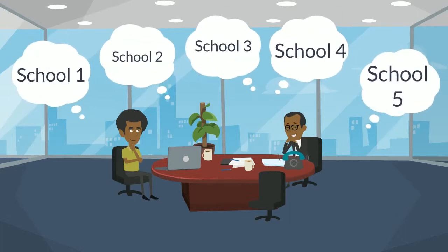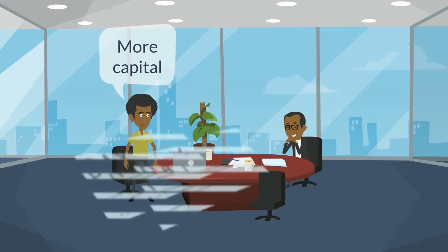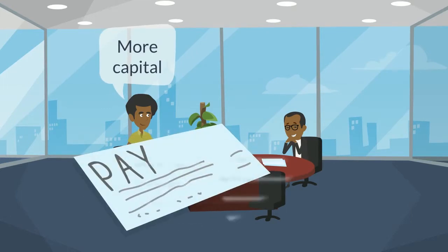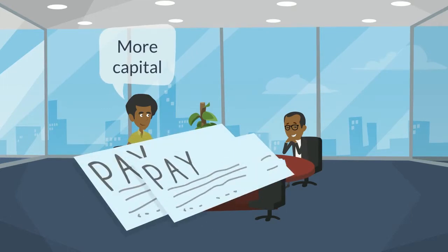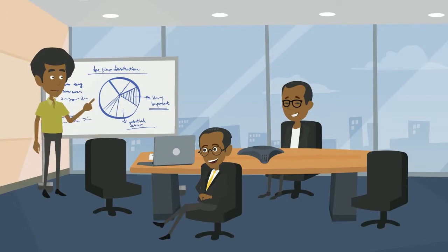There is a high demand for Adeshala and Chidi's technology from other schools, but they don't have enough capital to meet up with this demand. They need additional capital, and Mr. Moussa has that capital. Mr. Moussa likes Adeshala and Chidi's business, so he decides to invest.